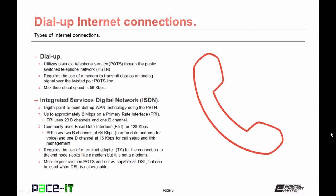BRIs are deployed at multiples of 128 kilobits per second. A BRI uses two B channels at 64 kilobits per second each — one for data and one for voice — and one D channel which operates at 16 kilobits per second, which is used for call setup and link management. You can bundle basic rate interfaces together to achieve more speed. An ISDN connection requires the use of a terminal adapter, or TA, for the connection to the end node.